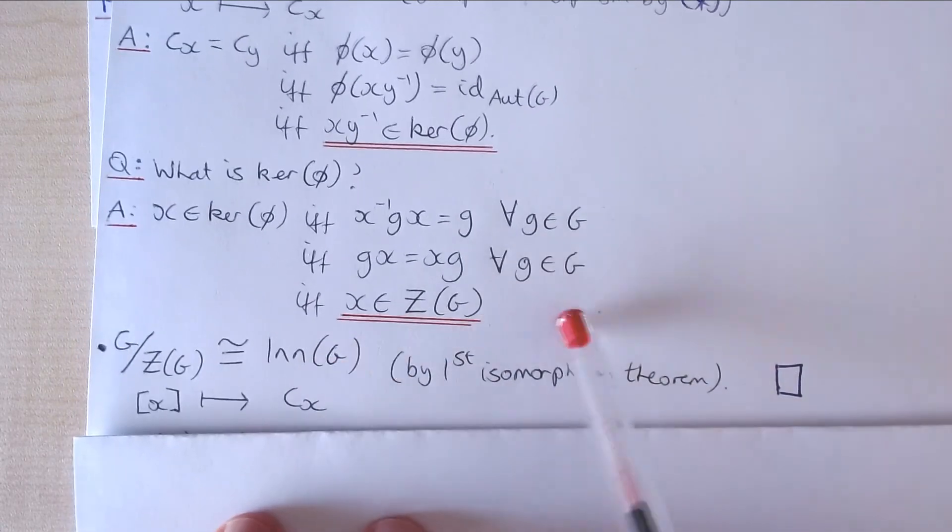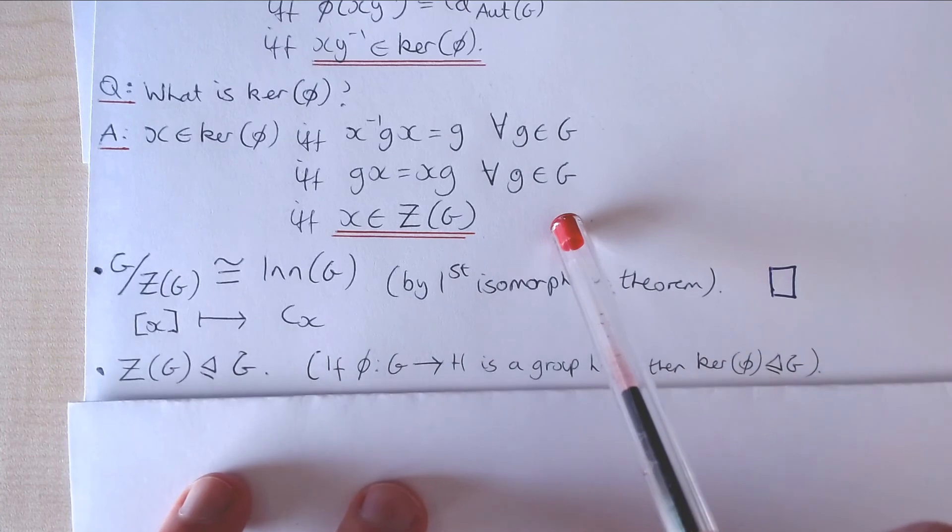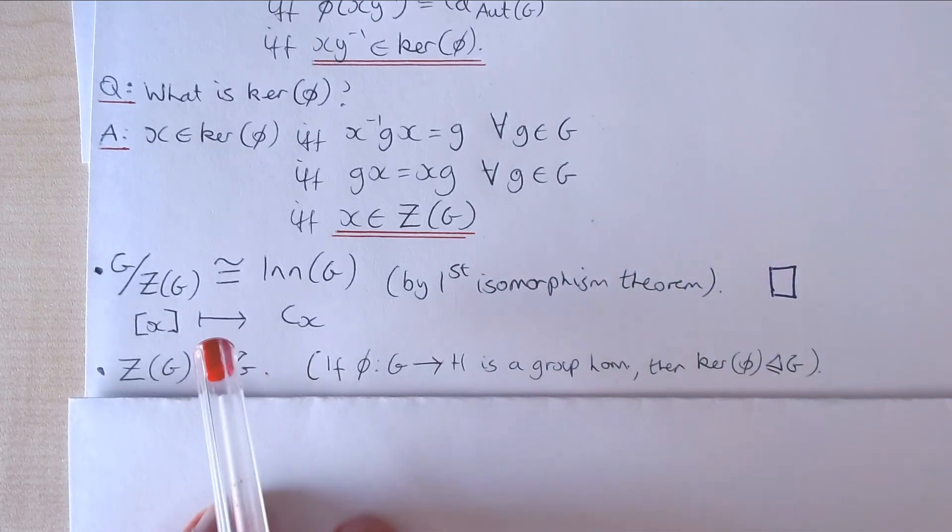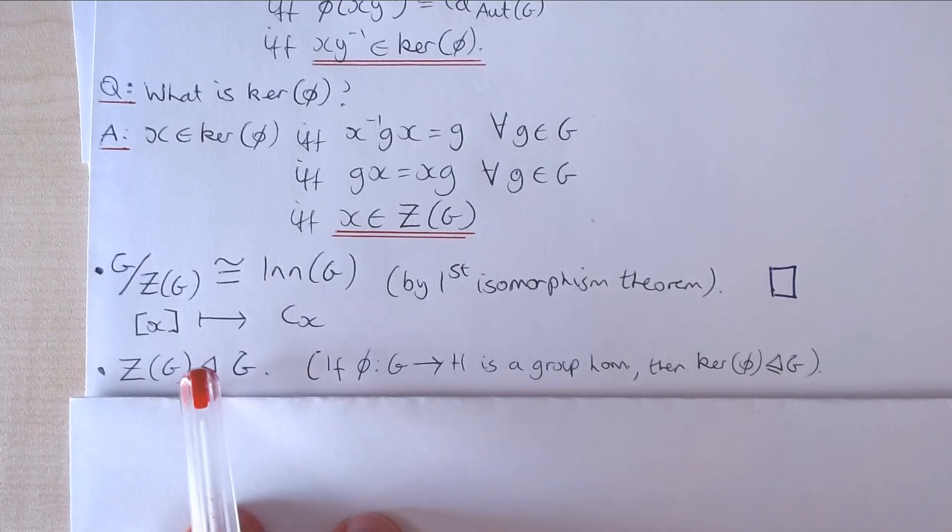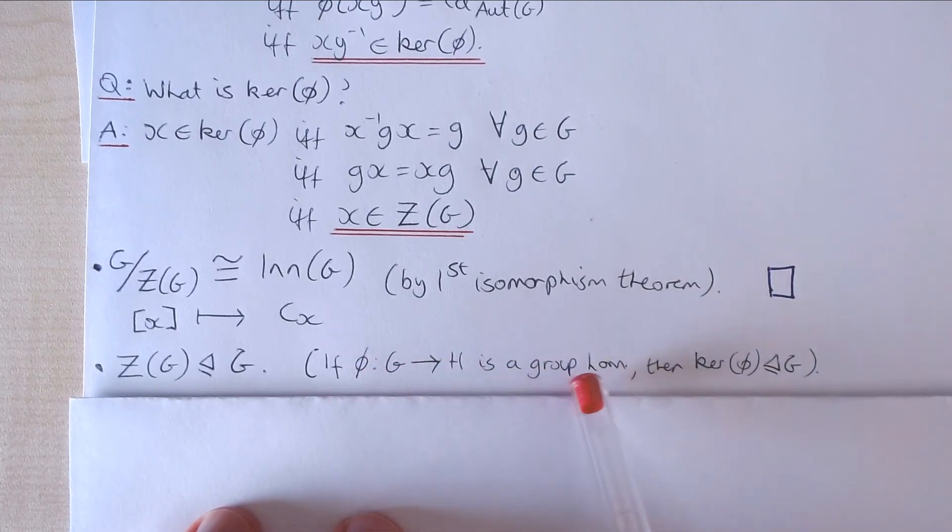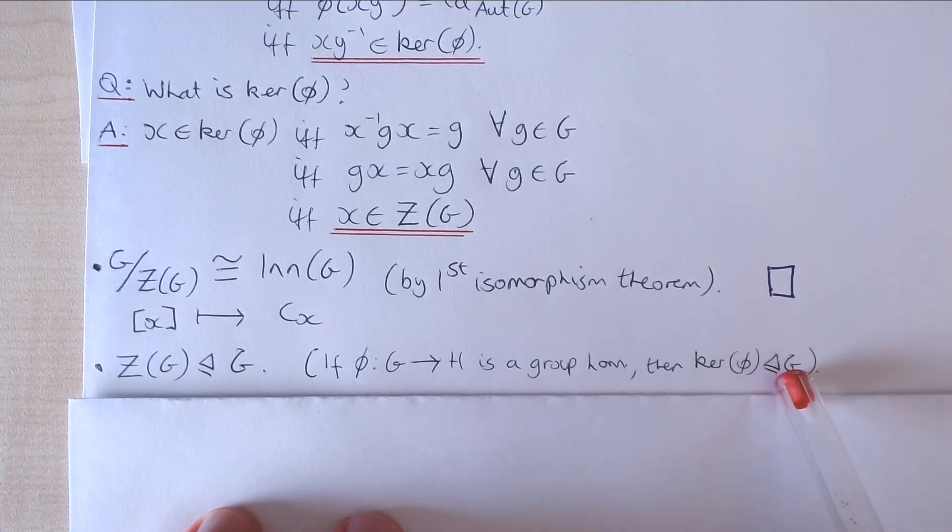And as a nice little by-product of this, we've actually established an alternative proof that the centre of a group G is a normal subgroup of G, because we recall that if phi from G to H is a group homomorphism, then the kernel of phi is always a normal subgroup of G.